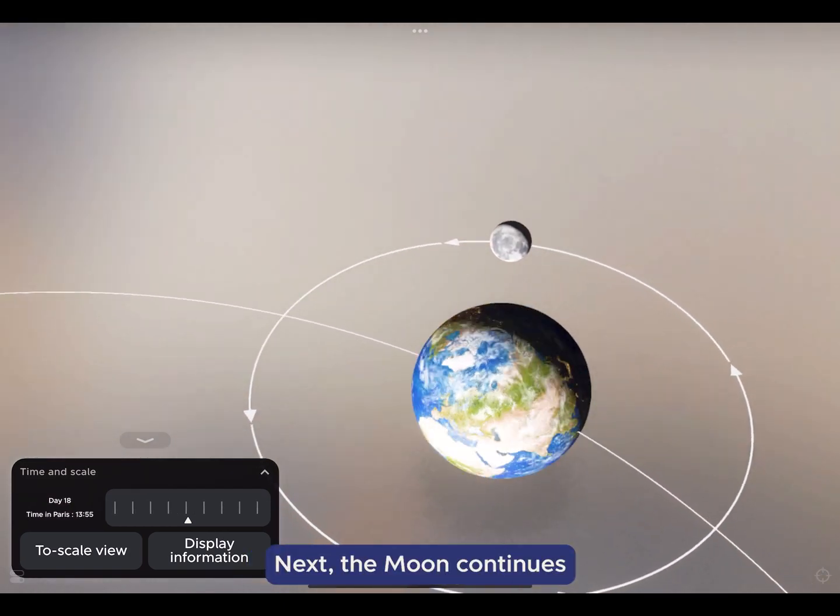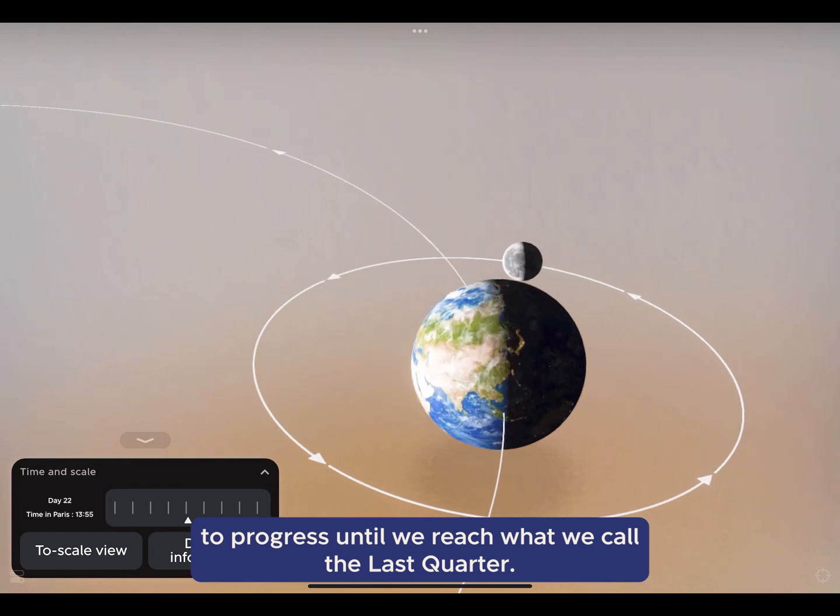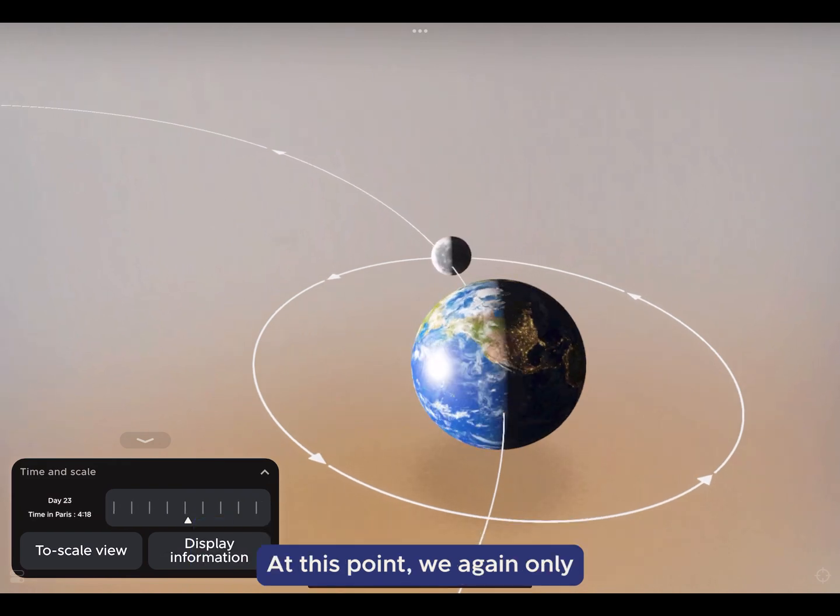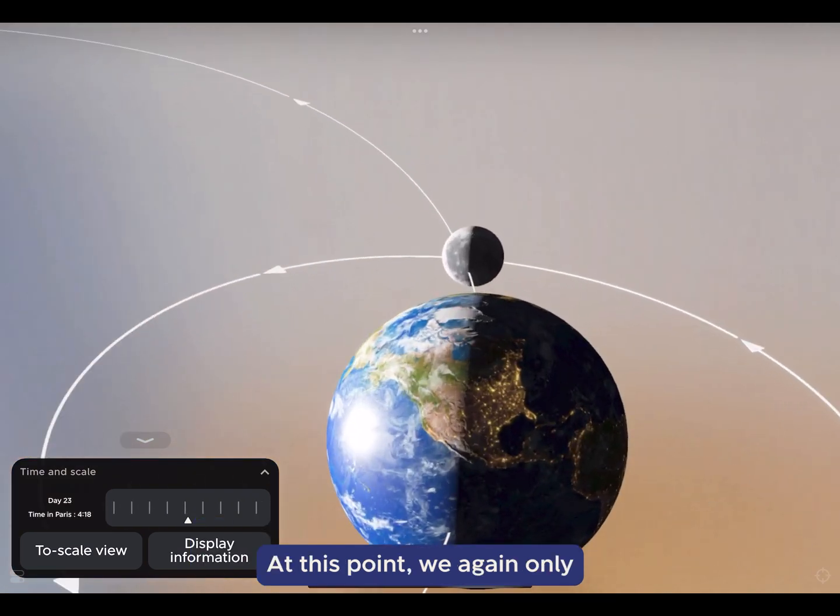Next, the Moon continues to progress until we reach what we call the last quarter. At this point, we again only see half of the Moon.